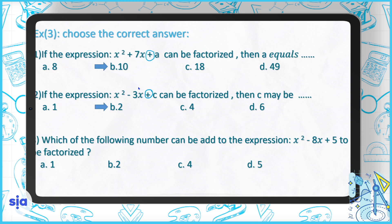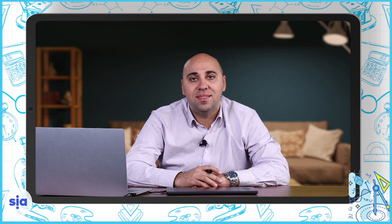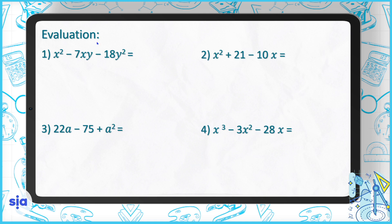Question 3: which of the following numbers can be added to the expression x squared minus 8x so that it can be factored? The last sign is plus, so we want a number whose factors sum to 8. The answer is 7, since 7 and 1 sum to 8.